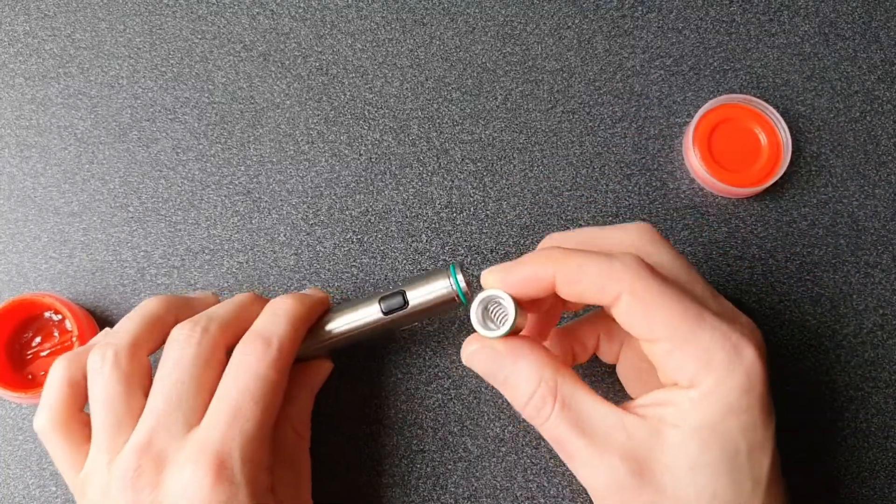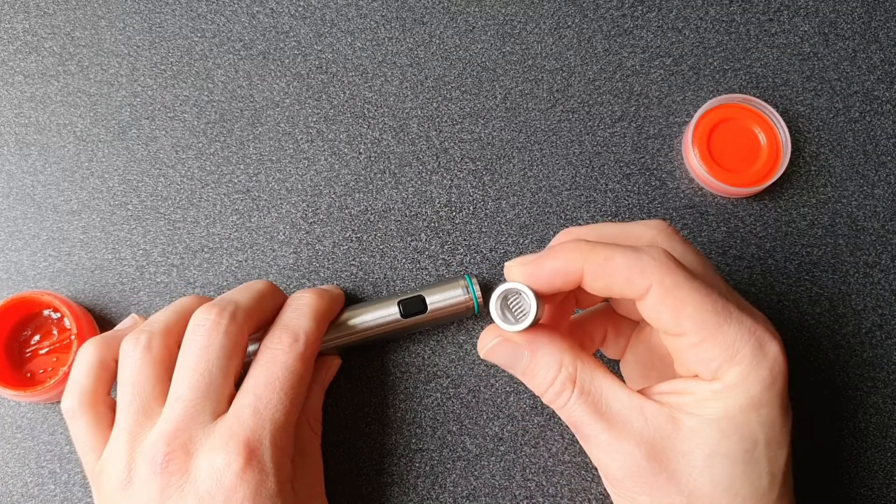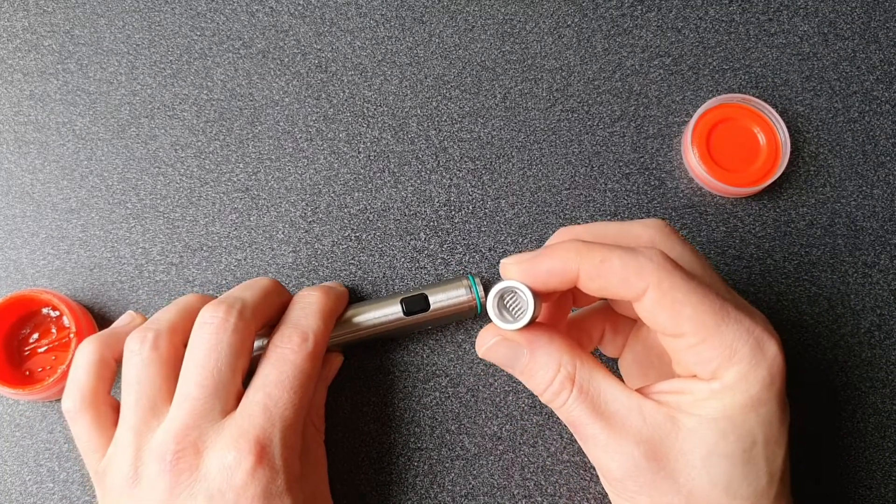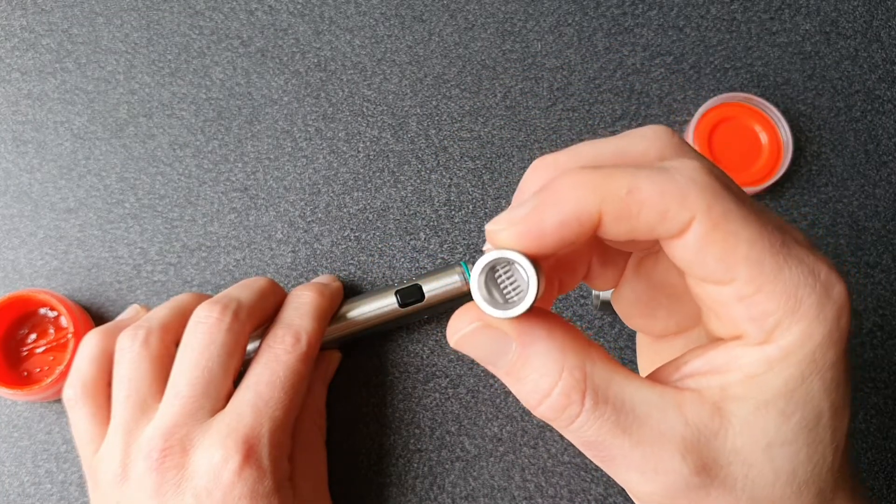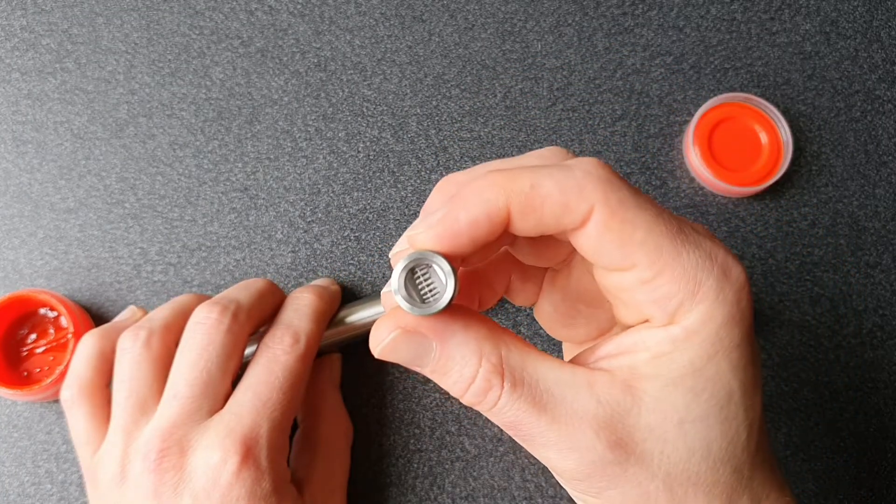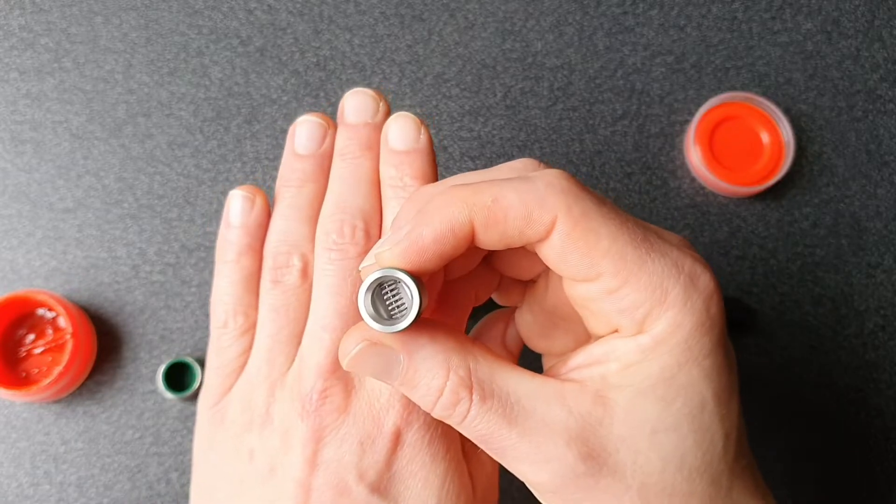So the coil is a quartz rod which is wrapped with a dual canthal wire. So it's a dual clapton wire. See that? Yeah cool. There we go.